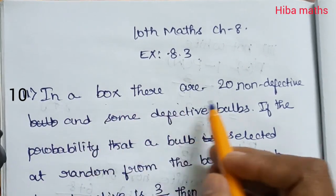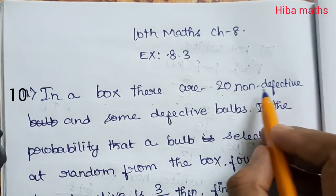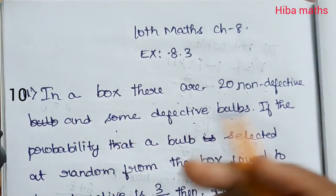In a box, there are 20 non-defective bulbs and some defective bulbs.